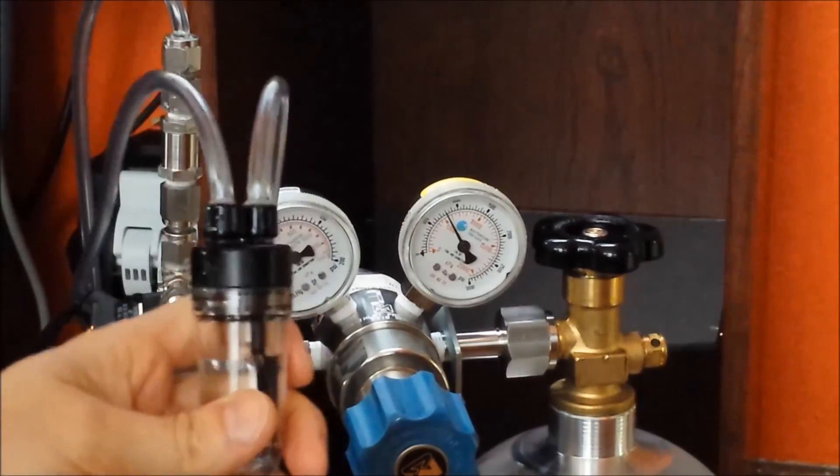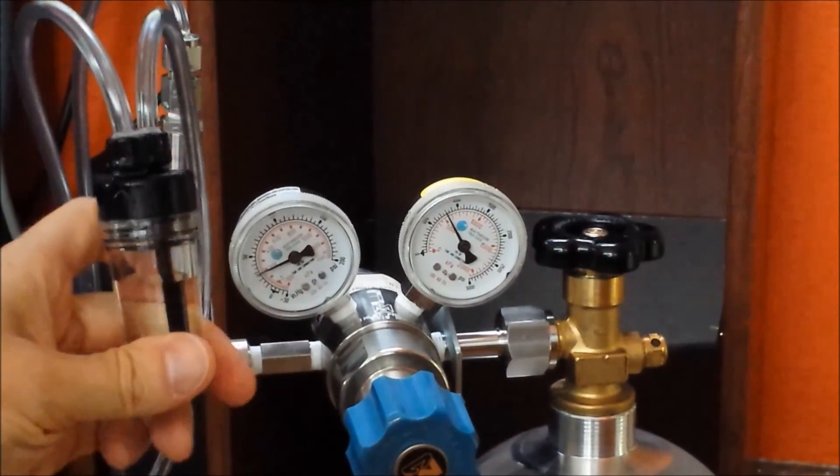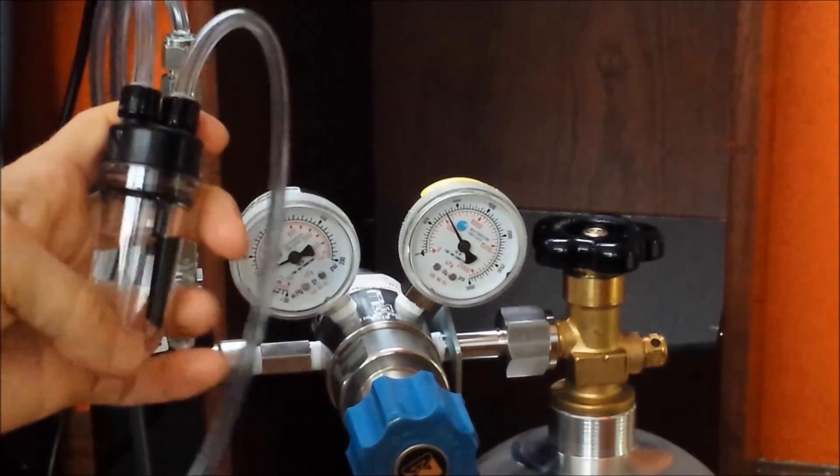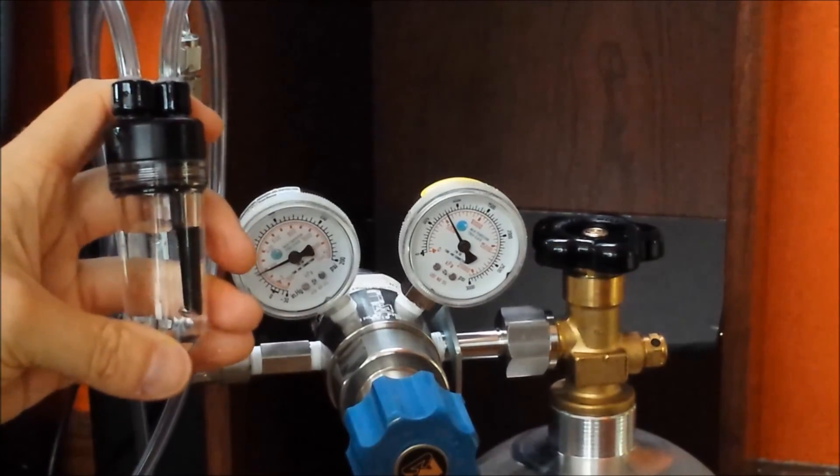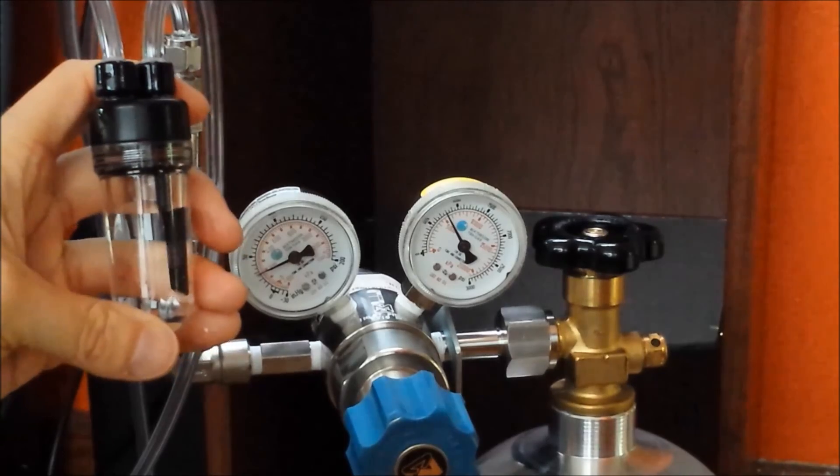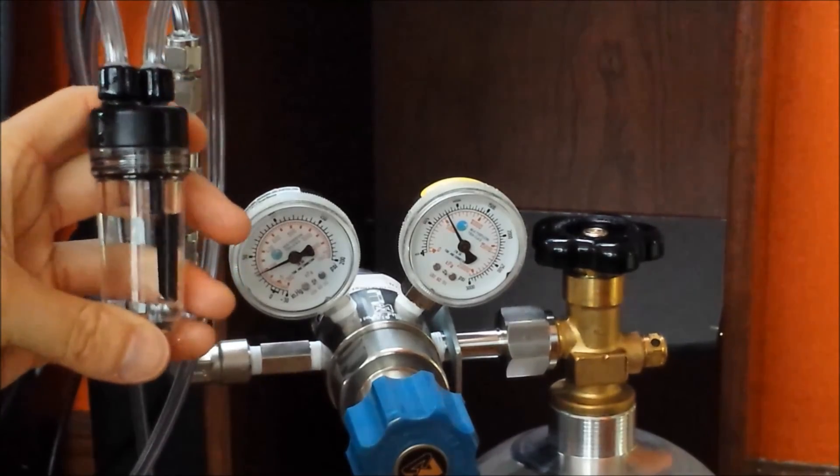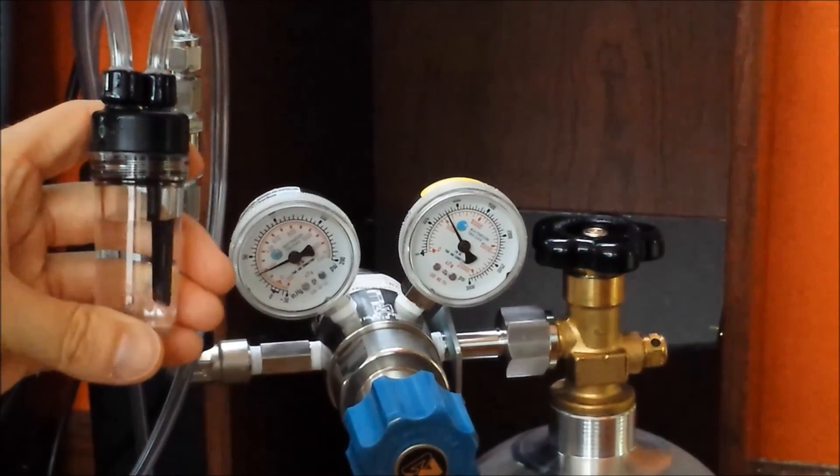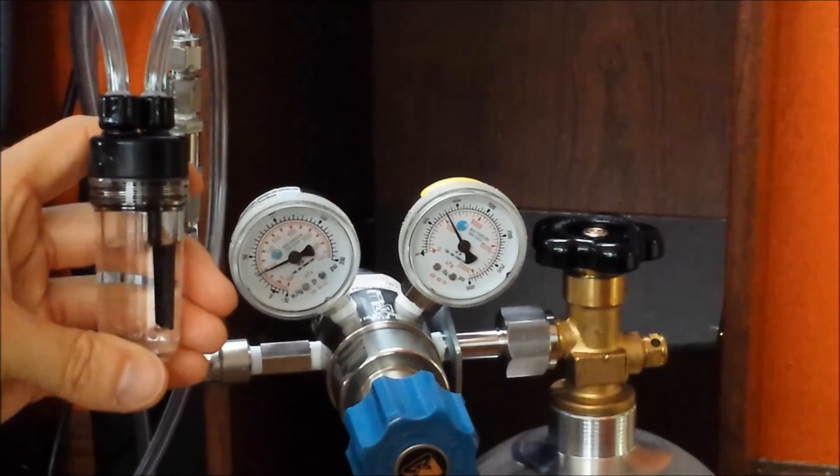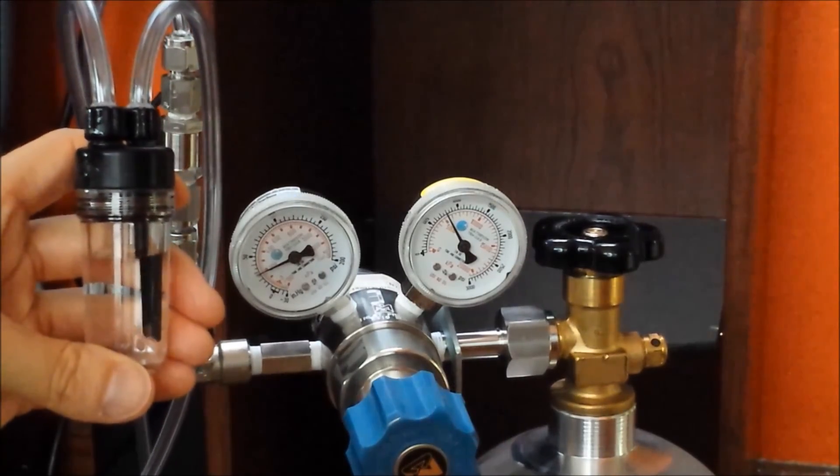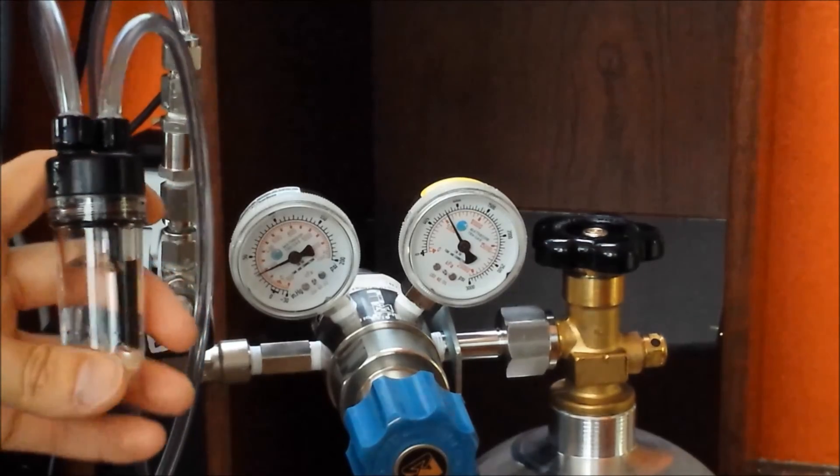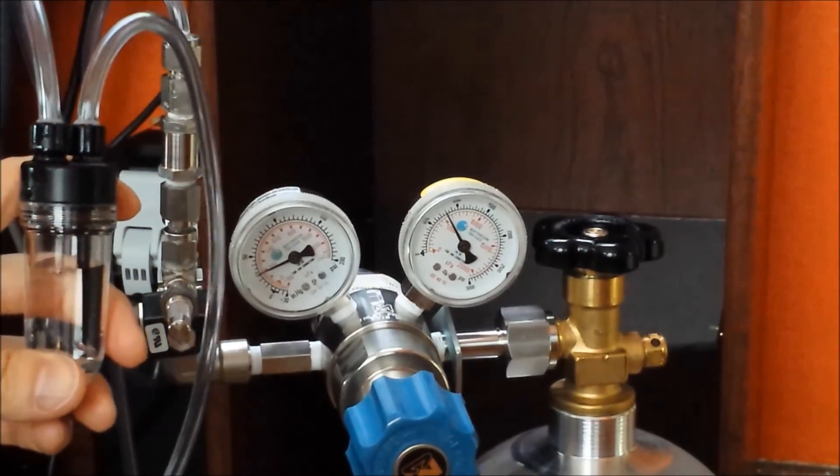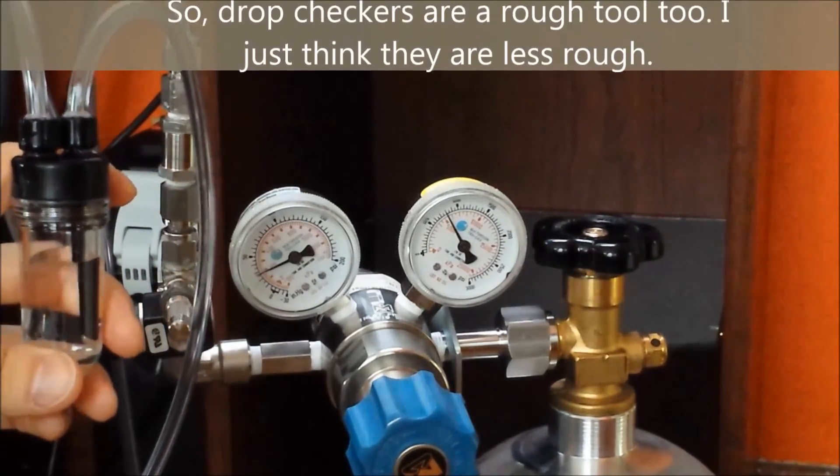So, here's my bubble counter. Just a cheap one, but it goes under the stand. You'll never see it. And, like I say, I now have turned the needle valve on. You can see maybe two or so bubbles a second. I'll do a better count later. But, it's just a rough tool anyways. And, honestly, I think bubble counters are not necessary. And, I'll probably get rid of this one eventually once I have my system up and running.